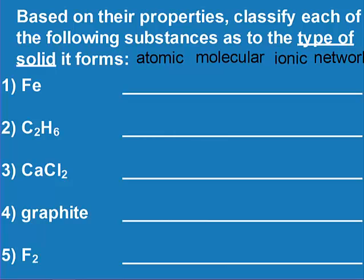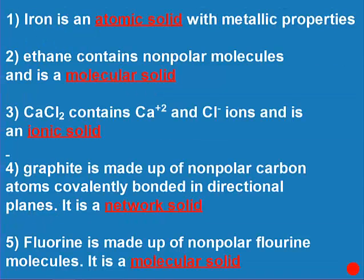Classify each of the following as atomic, molecular, ionic, or network solids. Iron is an atomic solid with metallic properties. Ethane contains nonpolar molecules, so it's a molecular solid. Calcium chloride contains ions, so it's ionic. Graphite is made up of nonpolar carbon atoms covalently bonded, so that's a network solid. And fluorine is nonpolar molecules, so it's a molecular solid.